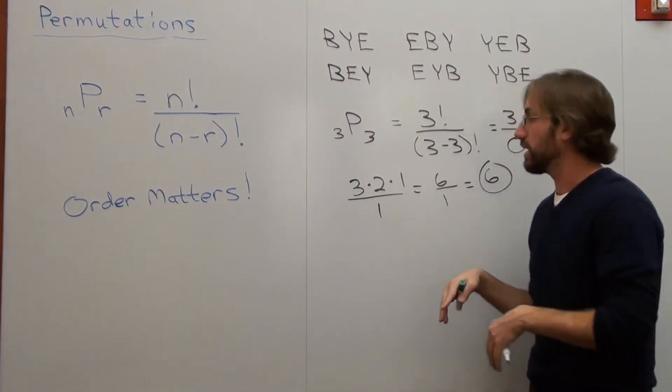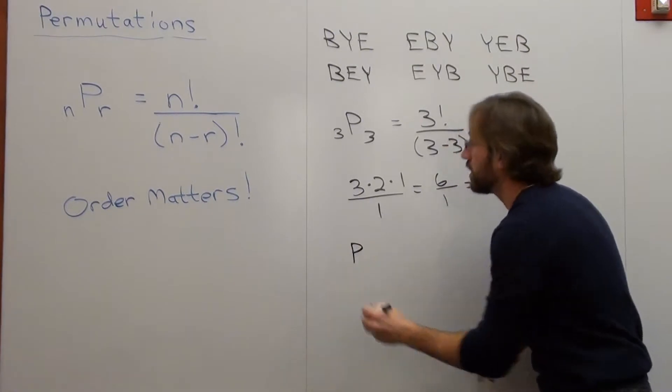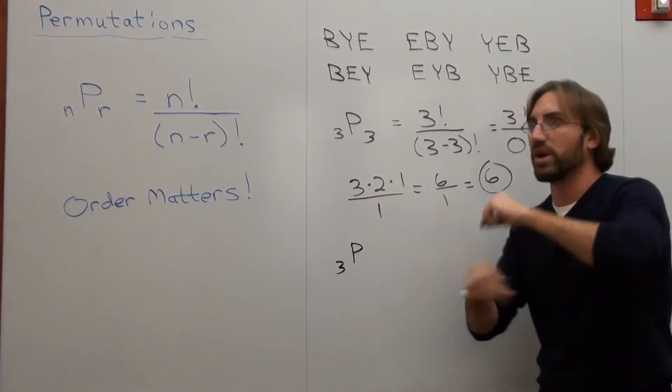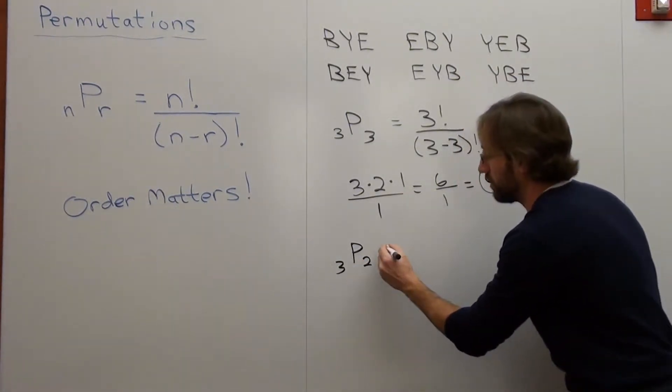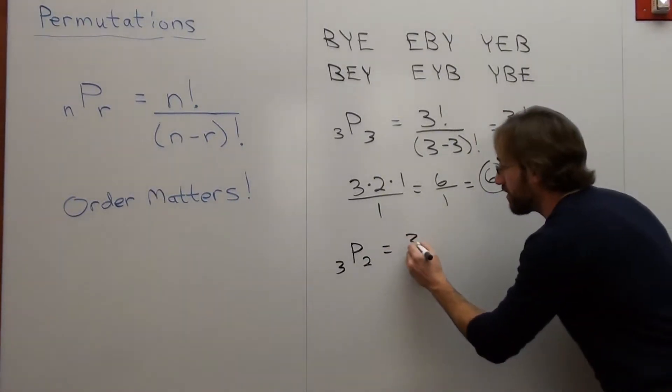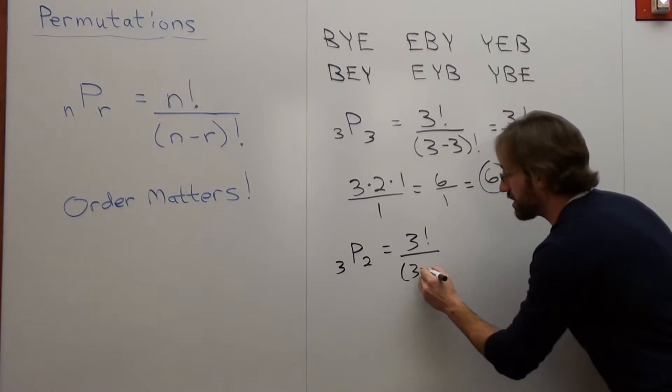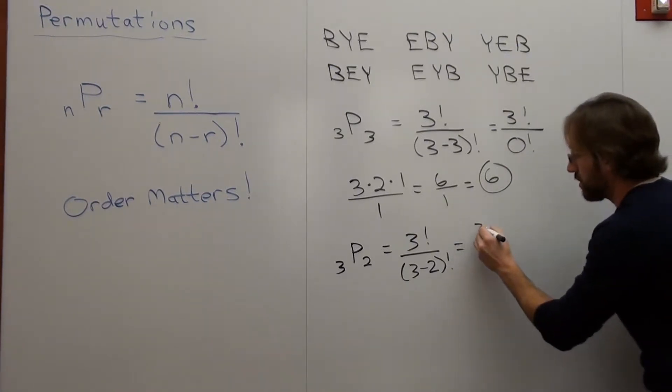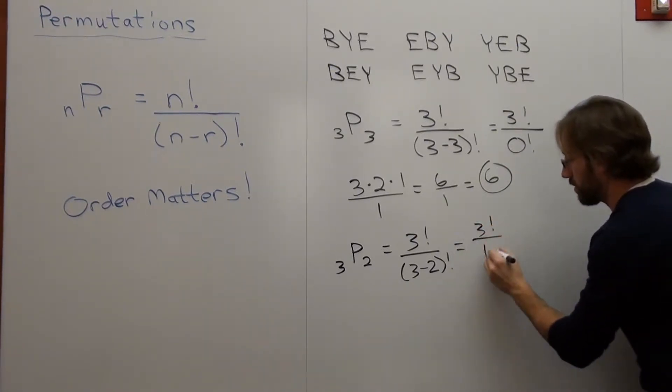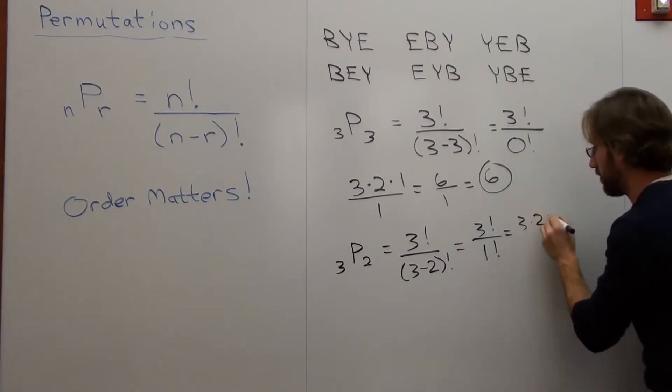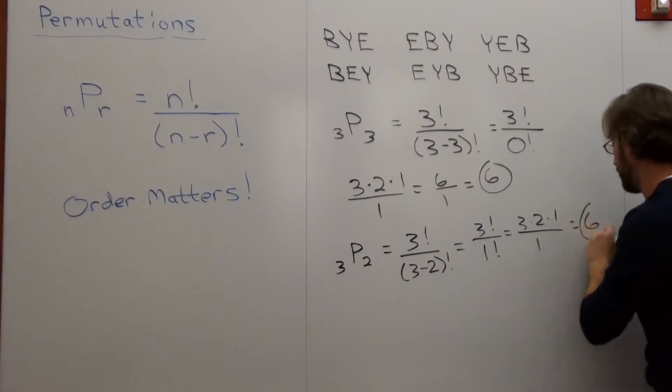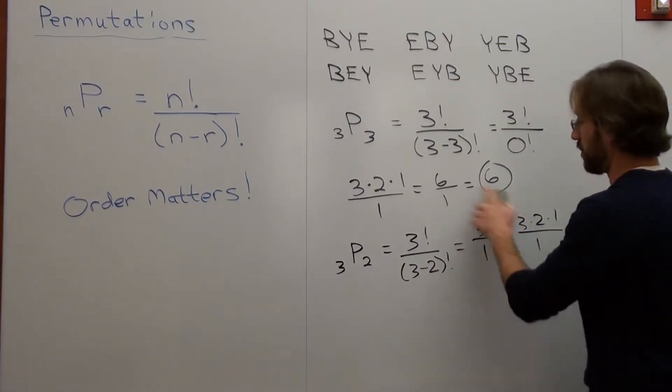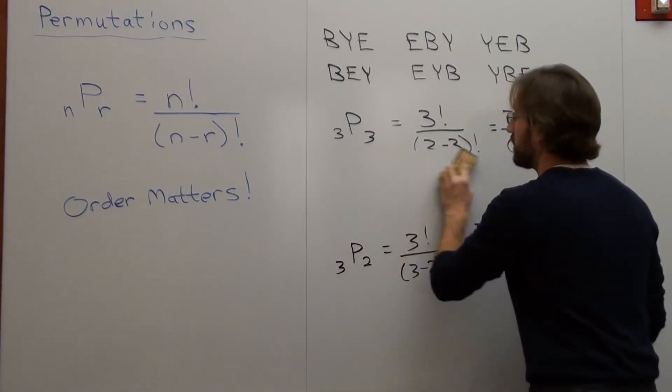Let me do the word BYE again, except instead of rearranging three of the letters, I want to see how many two-letter permutations I can make. So I'm going to rearrange only two of the letters. So I have three in total. I'm working with two. That's written as three factorial over three subtract two factorial. I'm going to find out what that equals. It's six again.